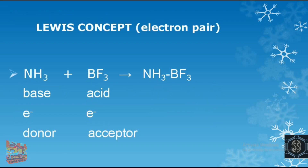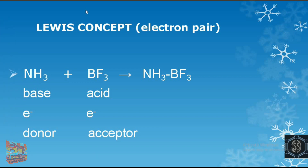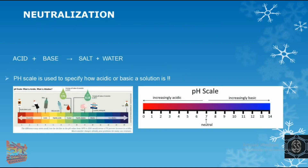Next is the Lewis concept, which is based on electron pairs. According to this concept, a base is a substance that acts as an electron pair donor, and an acid is a substance that acts as an electron pair acceptor. For example, NH₃ has a lone pair on nitrogen and, being a base, donates its lone pair to BF₃ which acts as the acid, forming the adduct NH₃·BF₃.